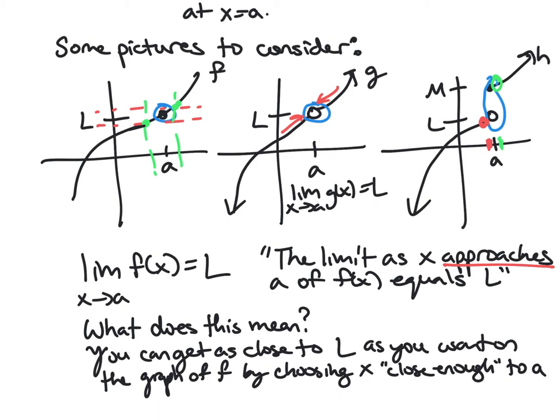In this case what we would write is that the limit as x approaches a of h of x does not exist, or DNE. And this is something we'll end up talking about more later when we talk about one-sided limits and stuff.